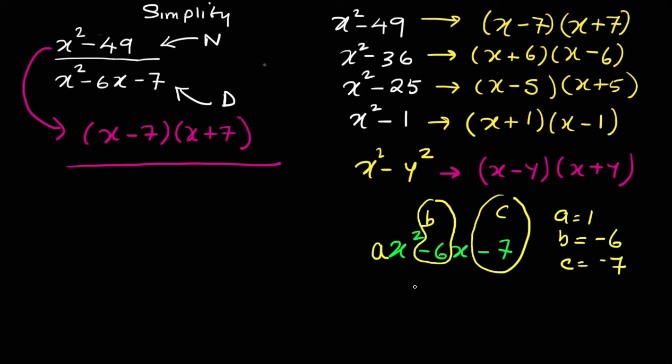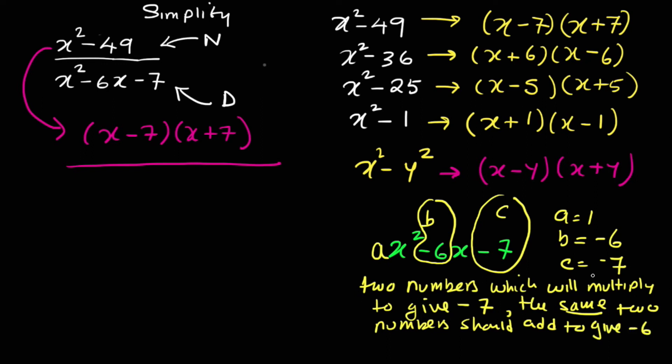So what are we looking for now in order to factorize? Do we need to do A times C? We can still do it to get C. That's right. So A times C is minus 7. You need to be clear. Structure your thought. Two numbers which will multiply to give minus 7. The same two numbers should add to give negative 6.